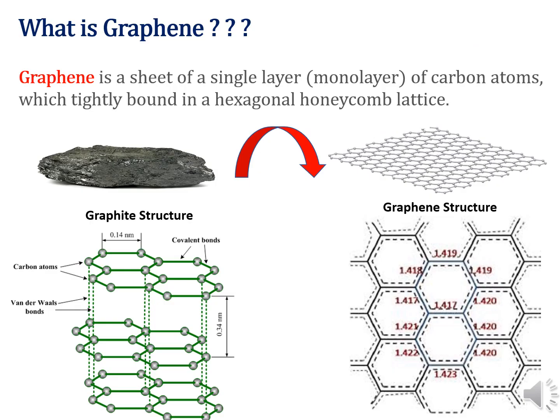Graphene is technically just a single layer of carbon atoms arranged in a hexagonal pattern. This is so thin that it's roughly a million times thinner than paper we use at the office. Basically, it is considered a two-dimensional thermally stable material at room conditions. The stacking of graphene sheets in large numbers gives graphite. The material was first studied in the 1940s, but it wasn't until 2002 that a University of Manchester research team was able to create it reliably by using scotch tape to peel off a layer from graphite. Now we have a range of synthesis processes.